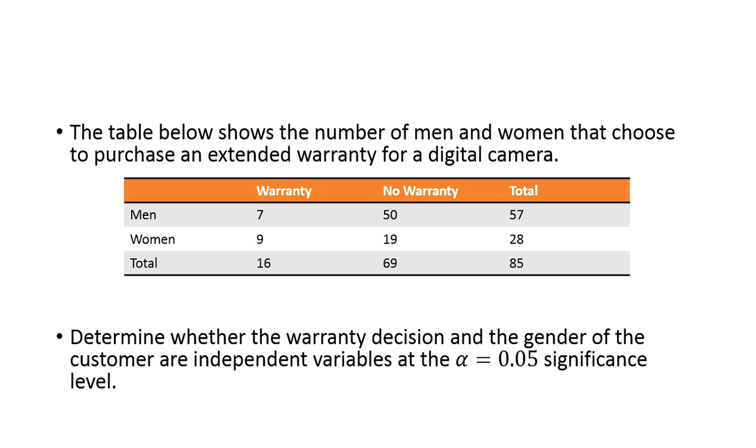All right, so here's an example of another one that you can work through if you want. That's basically it for our independent tests, which is our last section dealing with our chi-squared tests.